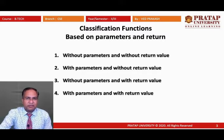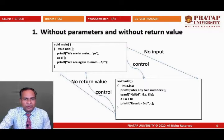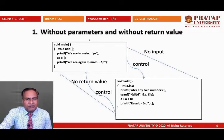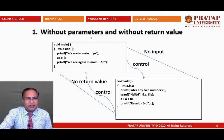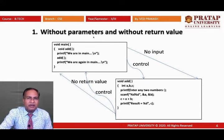First, classification based on parameters and data types — we categorize into four categories. We will learn the first category: function without parameters and without return value. When we define any user-defined function, we define the function data type, function name, and function parameter. Not every function needs to have a parameter or a return type — that depends on the user.